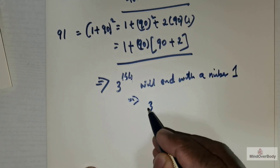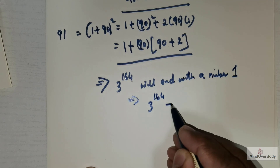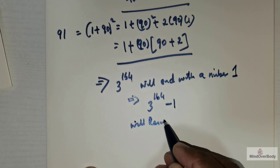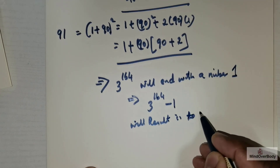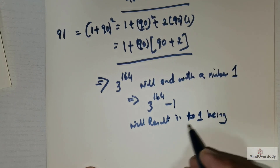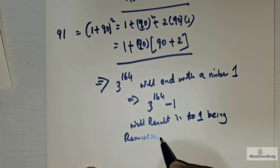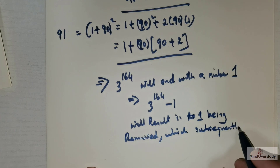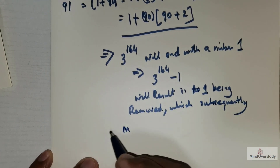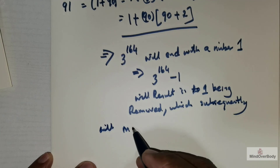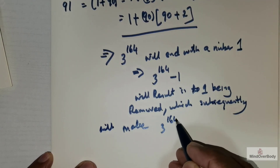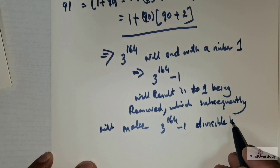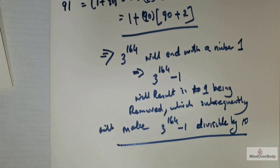So this means that 3 raised to the power 164 minus 1 will result in that trailing 1 being removed, which subsequently makes 3 raised to the power 164 minus 1 divisible by 10. That is the solution, students. Thank you very much.